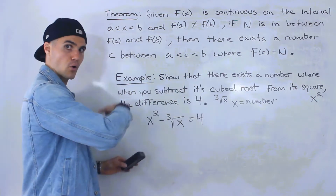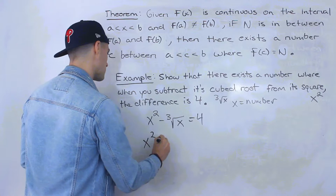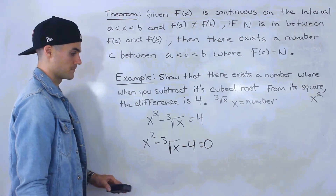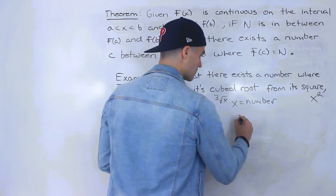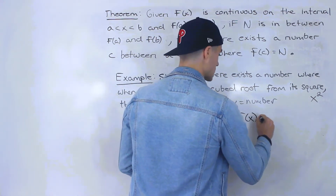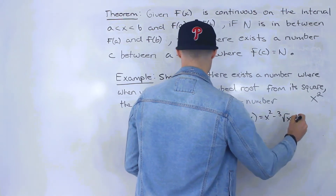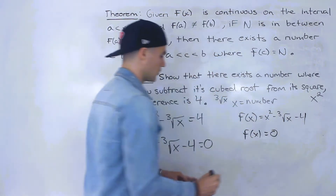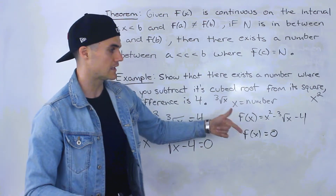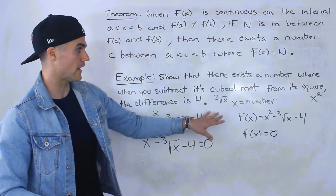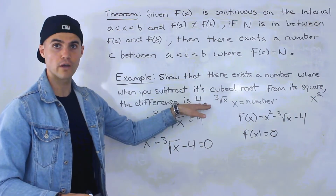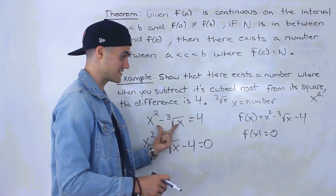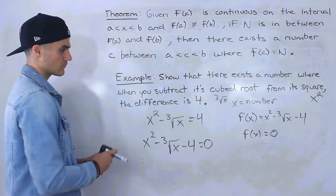We follow the exact same process — bring everything over to one side. So we get x squared minus the third root of x minus four equals zero. Then let f(x) equal x squared minus the third root of x minus four. We have to show there's some x value that makes this function equal zero — that this function has at least one x-intercept.